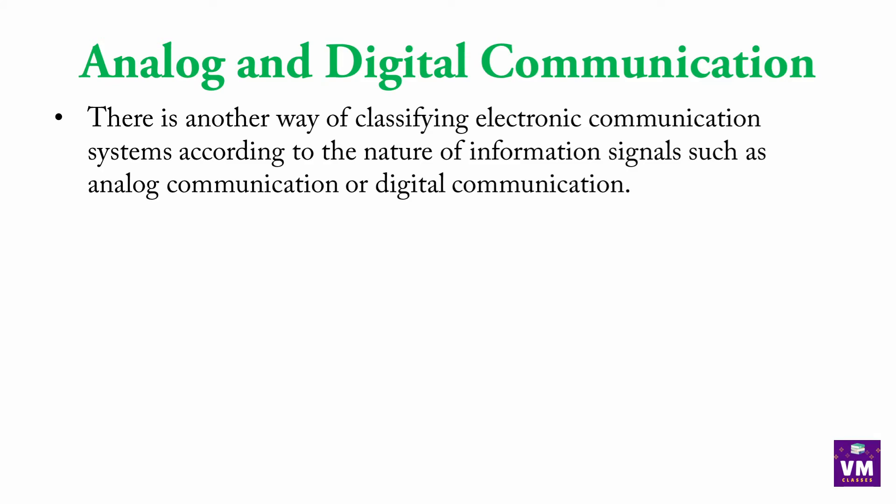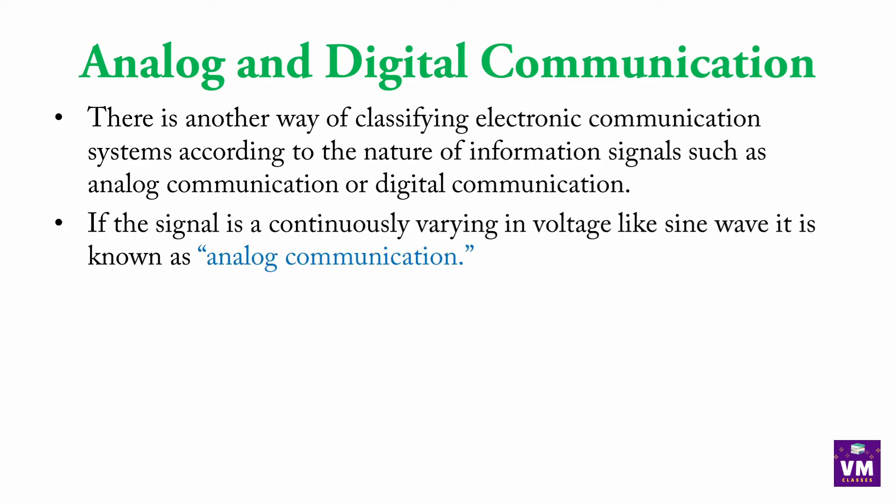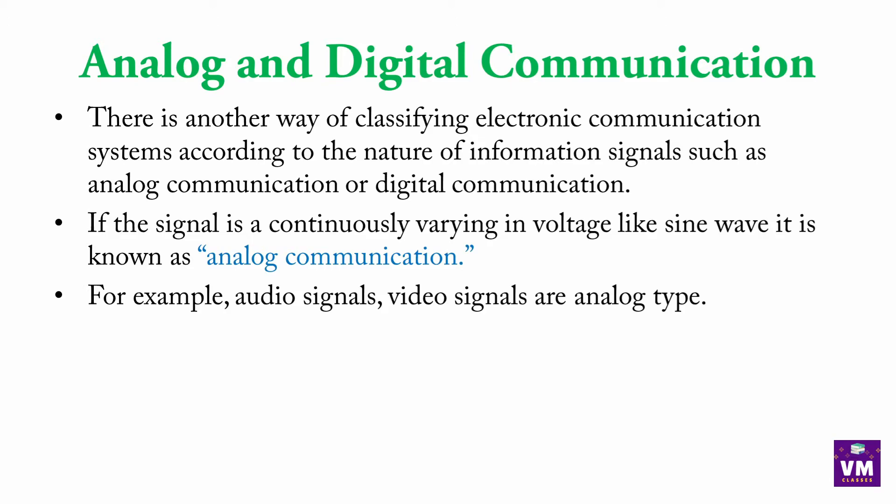Analog and digital communication. There is another way of classifying electronic communication systems according to the nature of information signals, such as analog communication or digital communication. Jo electronic signals hai, jo information mil rahi hai, uske nature pe depend jo communication ke types banaye hai — woh hai analog and digital. If the signal is continuously varying in voltage like a sine wave, it is known as analog communication. For example, audio signals and video signals are analog type. Jo pi signal mil rahe hai, woh sine wave jaise hai, to woh hote hai analog communication.